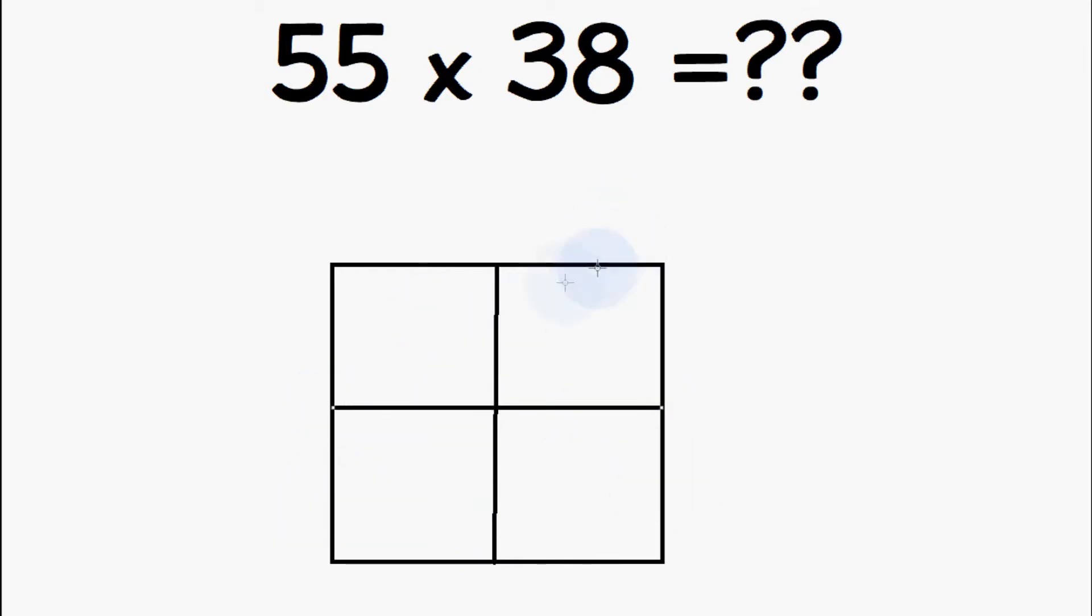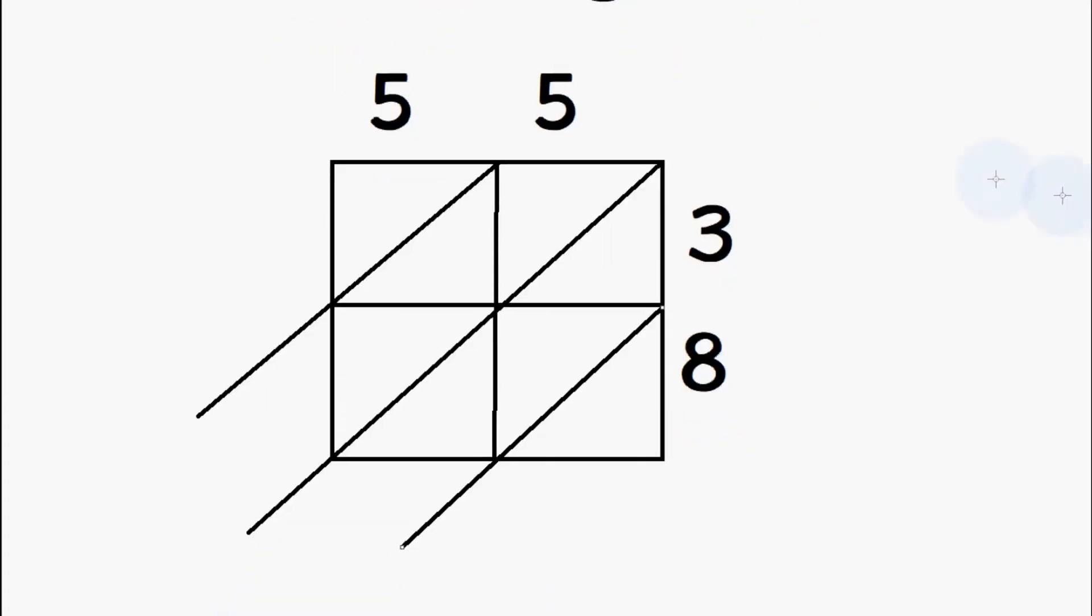And then we're going to allocate the boxes at the top here and the boxes on the side to the numbers in the equation. So we're going to write 55 at the top like this and then 38 on the side like this. We're then going to diagonally divide each box like I'm doing here, and then we're going to break down 55 times 38 into much smaller and simpler math equations.